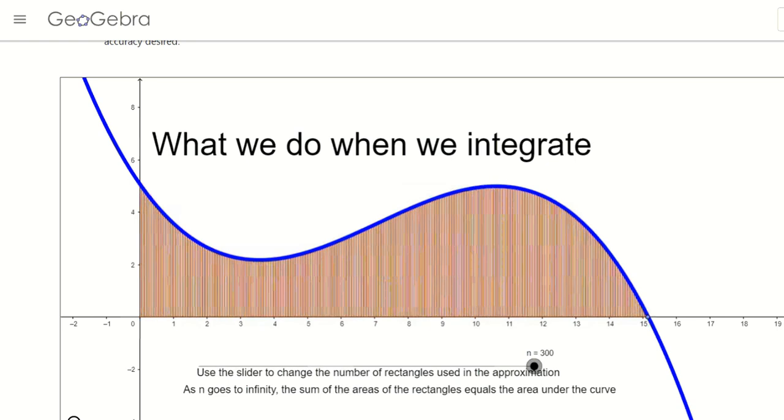And in the limiting case, I let n go to infinity, which 300 might as well be infinity. I can see that there's pretty much no error. And so like it says, as n goes to infinity, the sum of the areas of the rectangles equals the area under the curve, which we know is the definite integral.